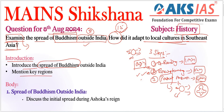We can mention key regions where Buddhism reached various parts of Asia: Sri Lanka, Central Asia, China, Korea, Japan, and notably Southeast Asia. The spread of Buddhism to Southeast Asia was marked by its ability to adapt to and integrate with local cultures and traditions. We need to write a connectivity line between the introduction and the body part.